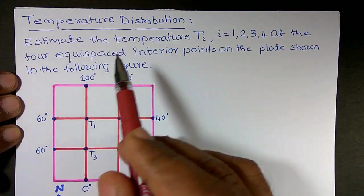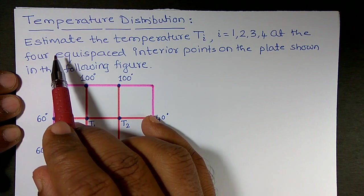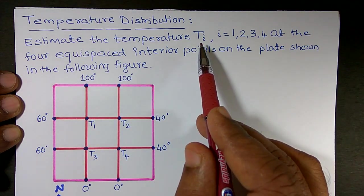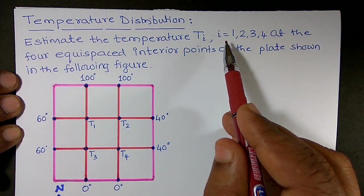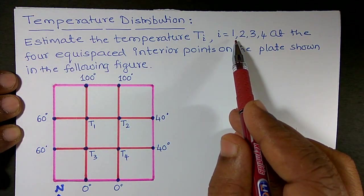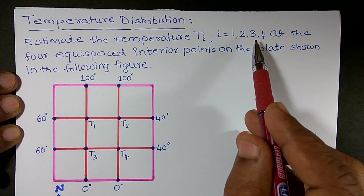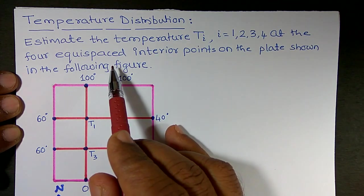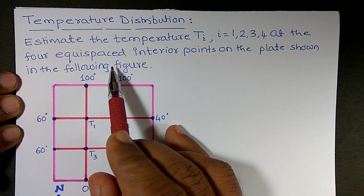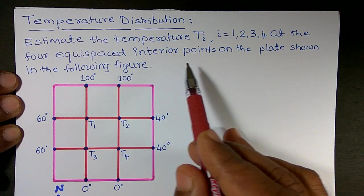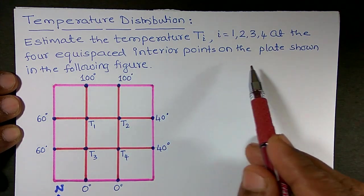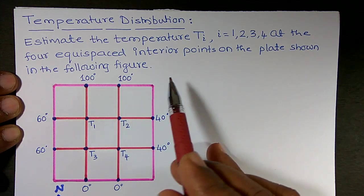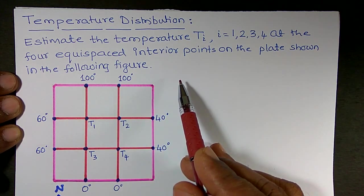Temperature distribution. Estimate the temperature Ti, where i is equal to 1, 2, 3, 4, at the four equispaced interior points on the plate shown in the following figure.